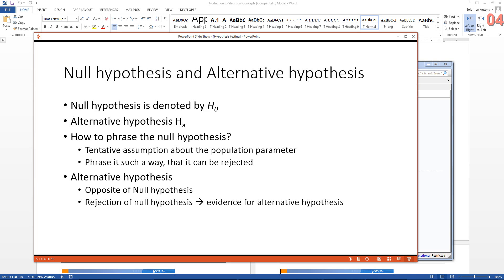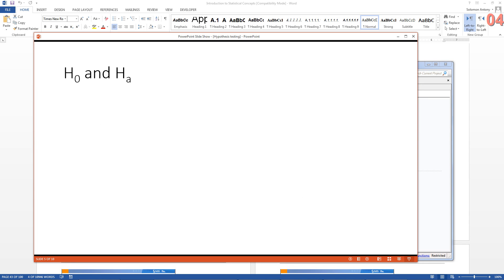For example, with the average GPA of MBA students 3.5, the null hypothesis would be mean GPA equals 3.5. The alternative hypothesis would be mean GPA not equal 3.5.